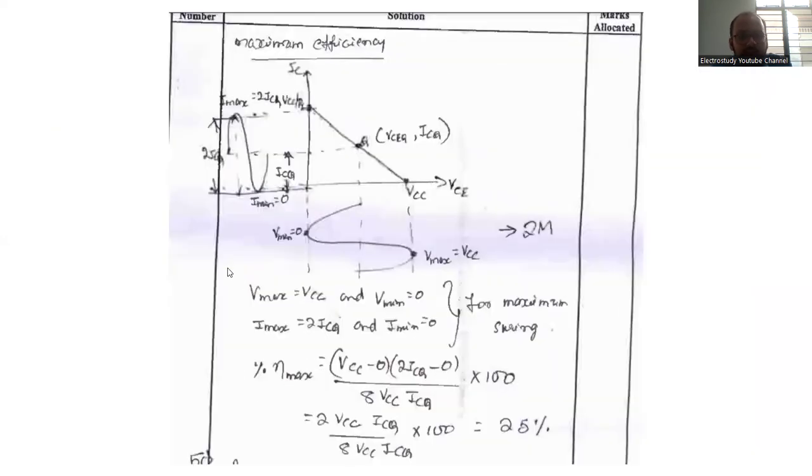Show that maximum efficiency of the series fed directly compared to class A amplifier is 25%. You should know about the class A amplifier. Whatever the input follows, it follows output. You will be getting the efficiency, use the formula.